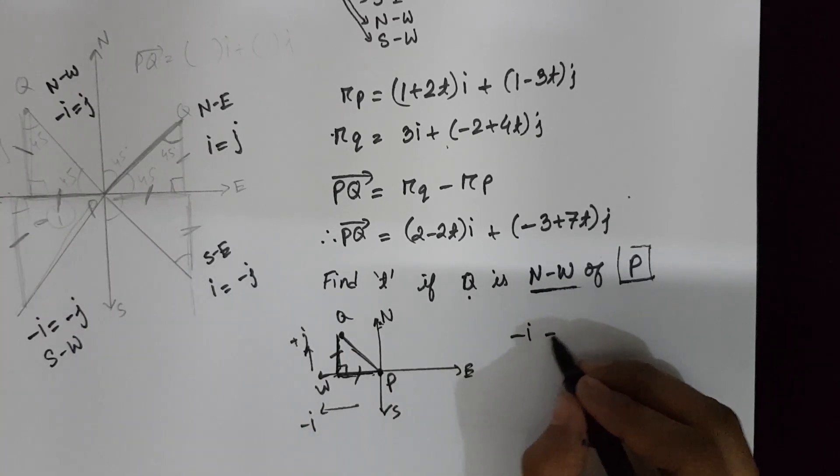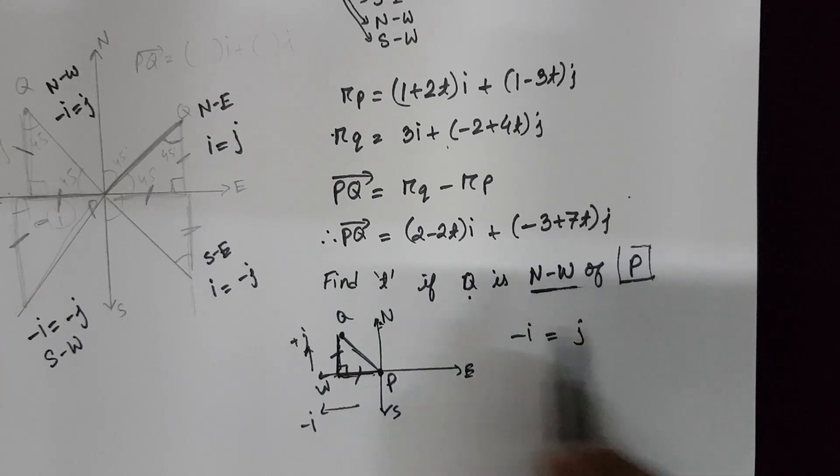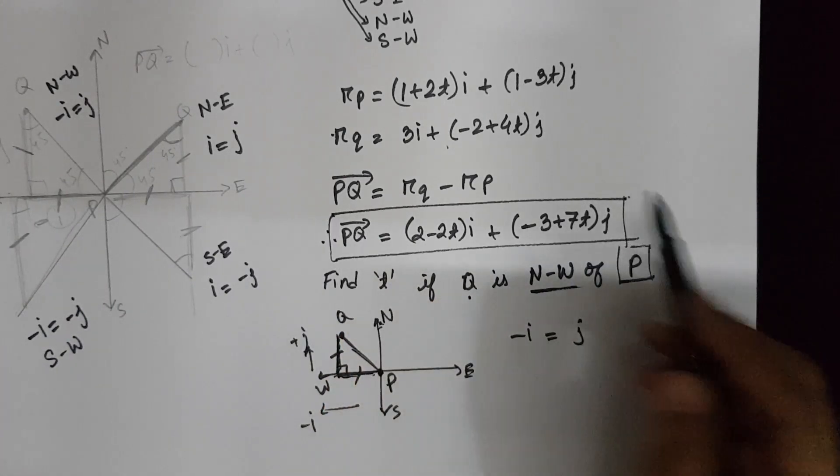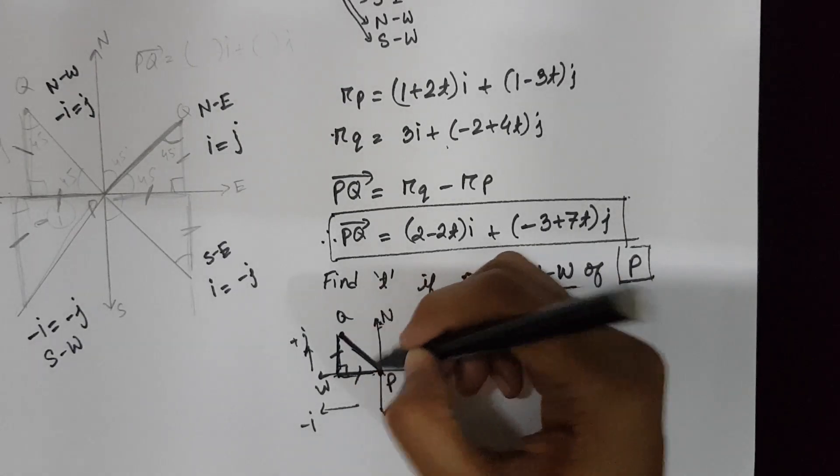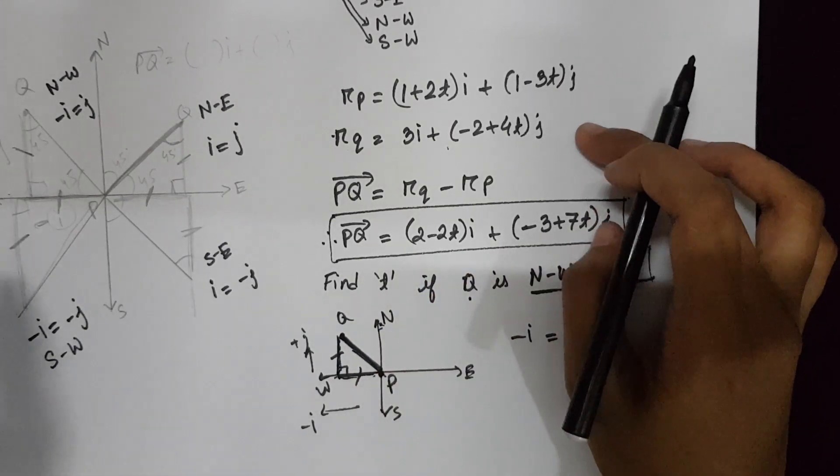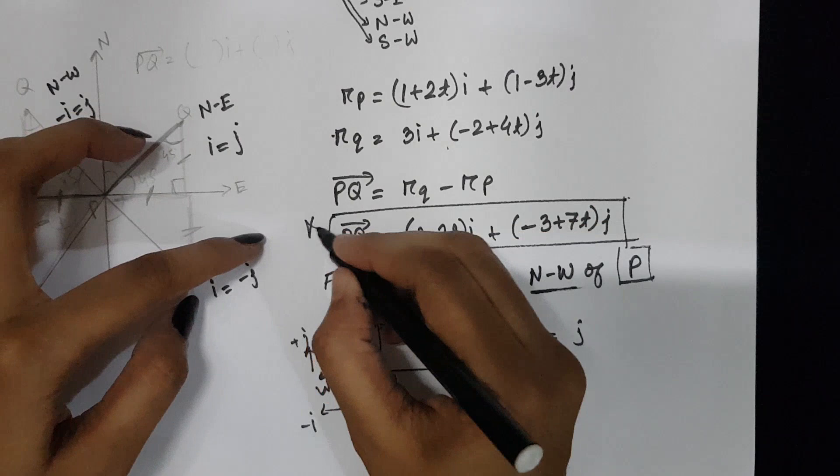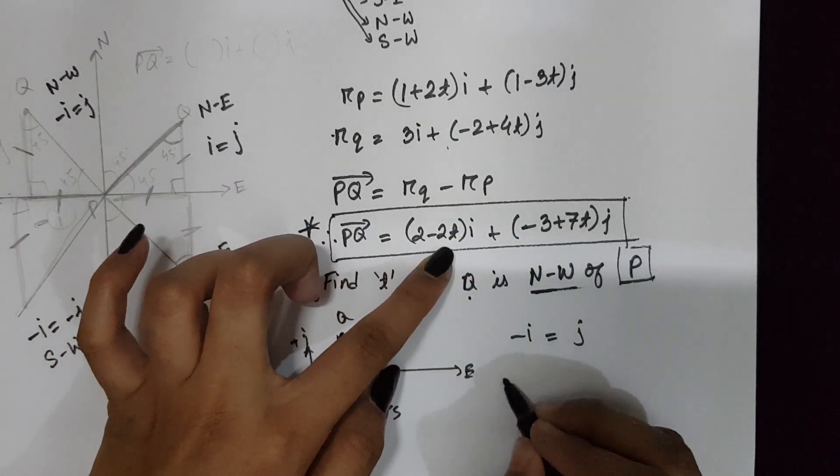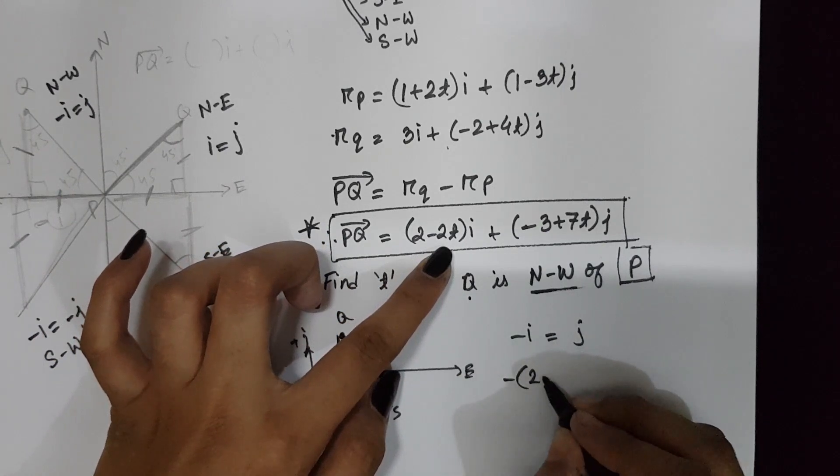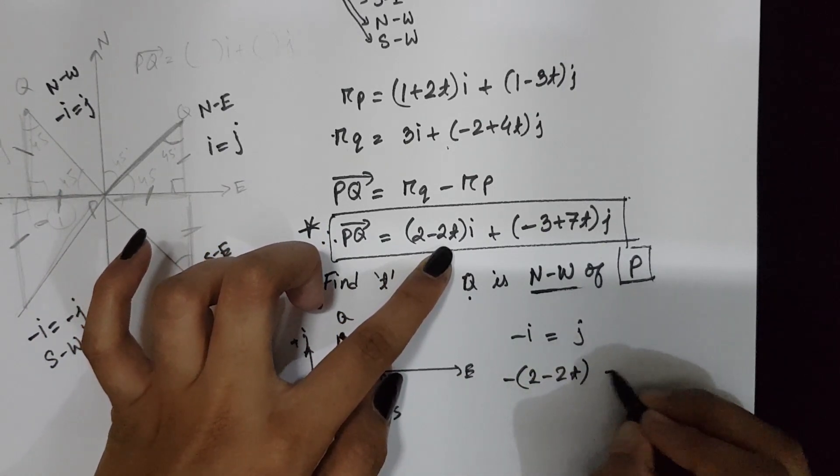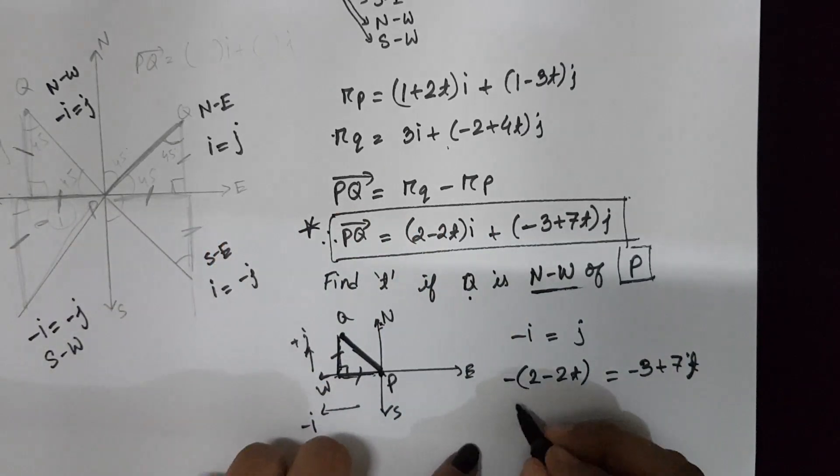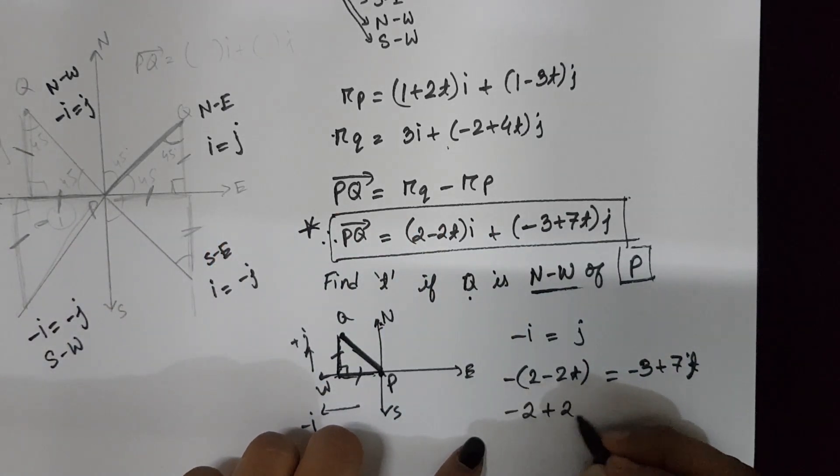Here the I coordinate, negative I will be equal to the positive J. The I and J has to be from the equation PQ, not RP or RQ. It has to be from the relative distance, the displacement equation. The I coordinate is negative. So minus equals J. Minus 2 plus 2.